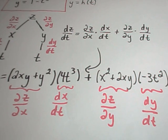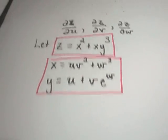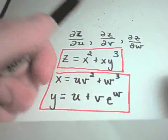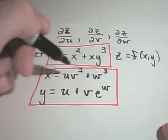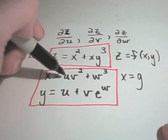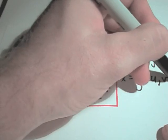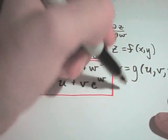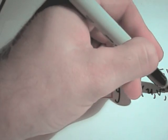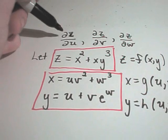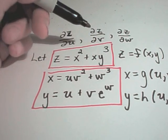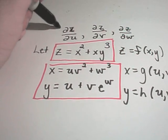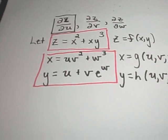Let's do at least one other example that's a little more complicated. Now z depends on x and y again, but x and y in turn depend on many more things. x is actually a function of u, v, and w. And y is also a function of u, v, and w. In this case we could talk about the partial of z with respect to u, v, or w. I'm just going to calculate the partial of z with respect to u.